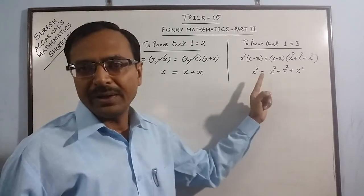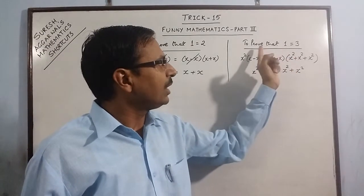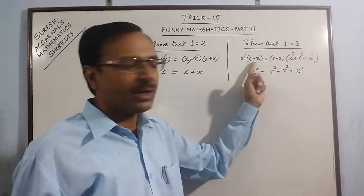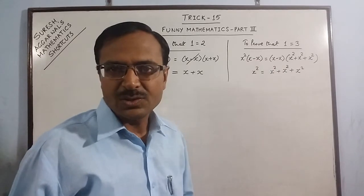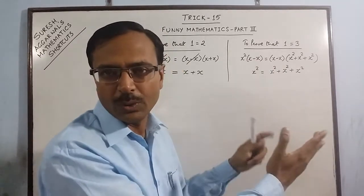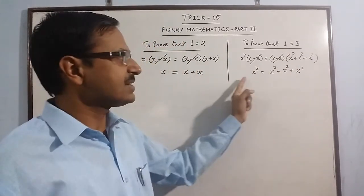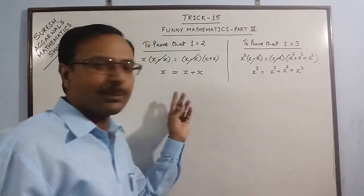Similarly, when we saw this proof of 1 is equal to 3, here also we had a common factor x minus x on both sides. So it has to become 0 equal to 0. We cannot just cancel this factor and arrive at this result which in turn will give something which is wrong.